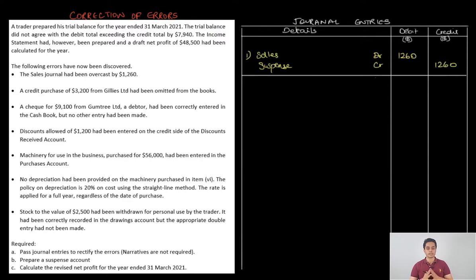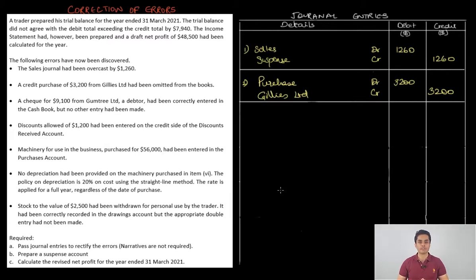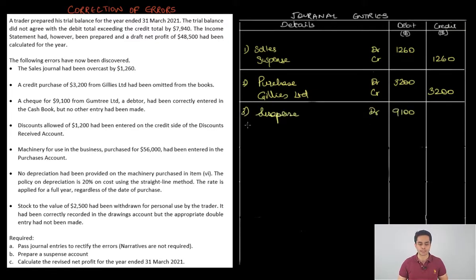The second error says that a credit purchase of 3200 from Gillies Ltd has been omitted from the books. This is a two-sided error — an error of omission. To rectify it, we pass the correct entry: Purchases Dr, Gillies Ltd Cr 3200. The third error: a cheque from Gumtree Ltd of 9100 was correctly recorded in the cash book but no other entry was made, meaning the amount was not credited to the debtor's account. So we credit Gumtree Ltd and debit suspense: Suspense Dr, Gumtree Ltd Cr 9100.